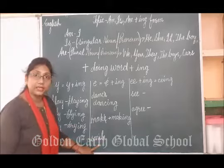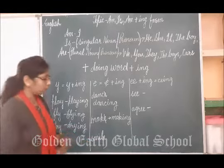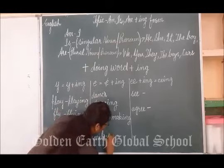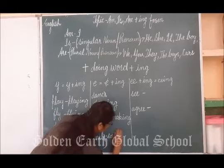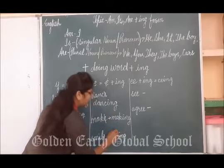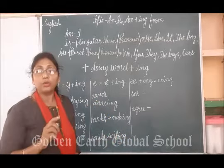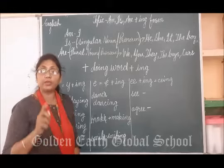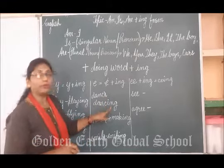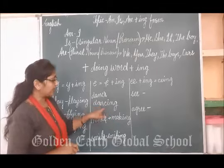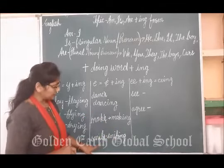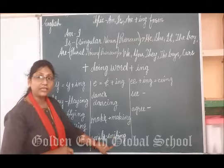In the same way, smile — it also ends with E. So what do we do? We cut the E and write smiling. Students, you have to remember: whenever any word ends with E, we do not write the E when we add -ing. We cut it and then add -ing. Dance, dancing. Make — cut E and write making. Smile — cut E and write smiling.